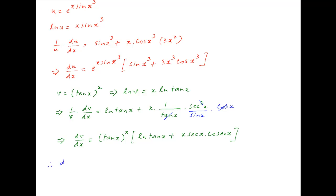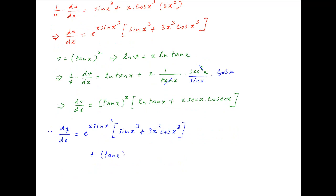Using the above results for du upon dx and dv upon dx, the value of dy upon dx is equal to e raised to the power x times sin x cube, times in brackets sin x cube plus 3x cube times cos x cube, plus tan x raised to the power x times in brackets ln of tan x plus x times sec x times cosec x, which is the required answer.